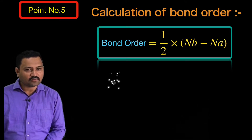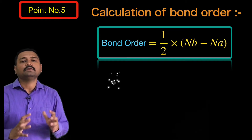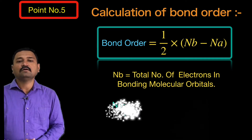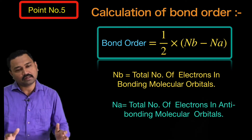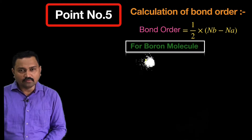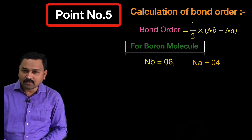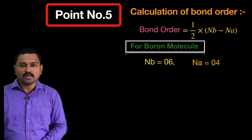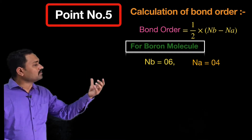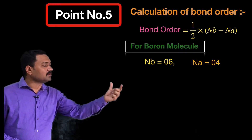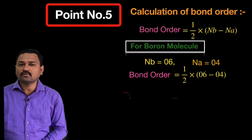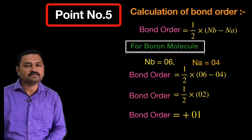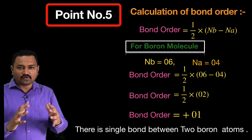Point number five: the calculation of bond order. Bond order = ½(Nb − Na), where Nb is the total number of electrons in bonding molecular orbitals and Na is the total number in anti-bonding orbitals. For boron molecule, Nb = 6 and Na = 4. Therefore, bond order = ½(6 − 4) = ½ × 2 = 1. So the two boron atoms are connected by a single bond.